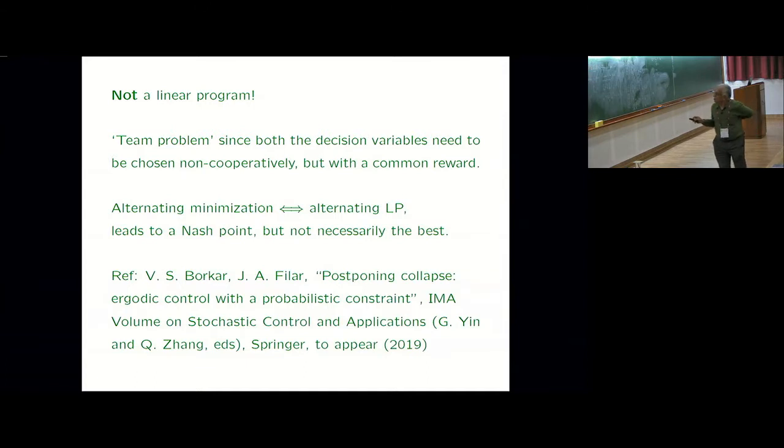But there's this extra artificial another measure-valued variable which you have to manage and that has this thing coming out of the representation result I had. Now this does become a hard problem because it's a team problem. It's not a vanilla risk sensitive problem. The risk sensitive reward was in the constraint.